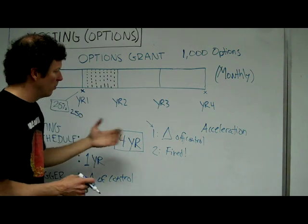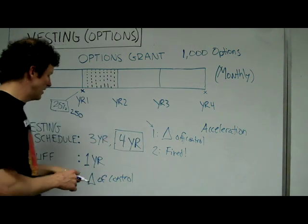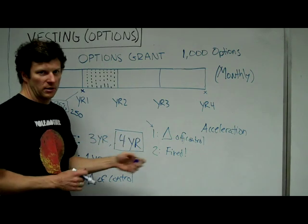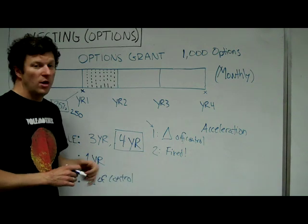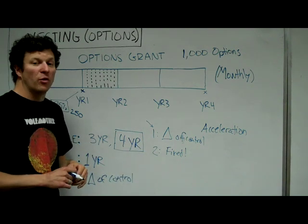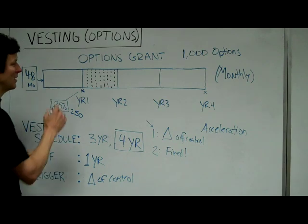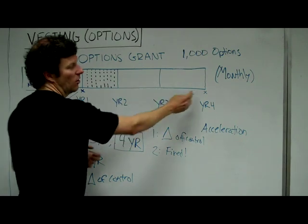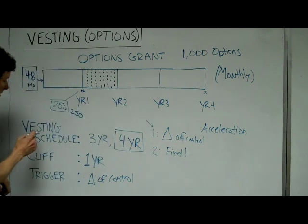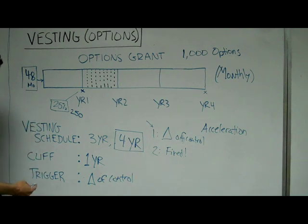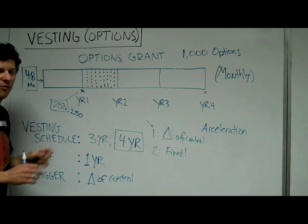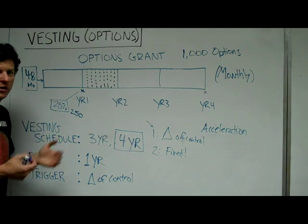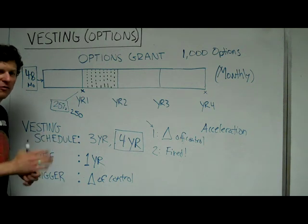So it's a way for an employee to protect themselves to have a single trigger or a double trigger and either accelerate based on change of control or if they get fired or when both of those things happen. Again, vesting is the process of accruing your options over time. And these concepts—vesting schedule, cliff, and trigger—are things that control how you vest and under what circumstances. You can also have performance-based vesting around whether you're hitting sales goals or engineering goals, but those vary from company to company.